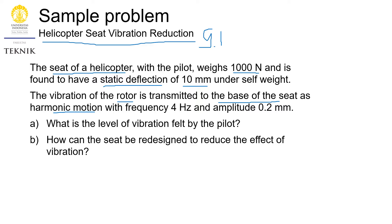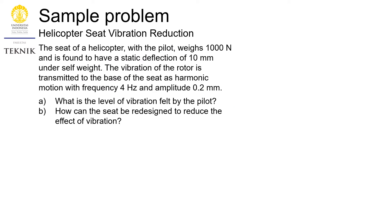We've got two questions to answer here. What is the level of vibration felt by the pilot, and how can the seat be redesigned to reduce the effect of vibration? First of all, we need to decide on the correct modeling of the system. Is this a forced or free vibration? Of course, it is very clear that it is a forced vibration. The seat itself is not vibrating, but it receives a vibration transmitted from the base. Second, is it the case of an undamped vibration or damped vibration? There is no indication of damping from the question.